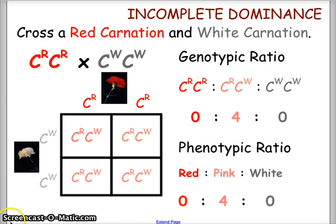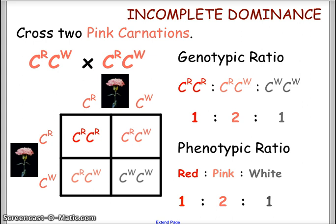Now let's cross two pink carnations: CR CW by CR CW. Segregating the alleles — CR and CW across the top, CR and CW down the left. The cross gives one CR CR red flower, two CR CW pink flowers, and one CW CW white flower. The genotypic ratio is homozygous red 1, heterozygous pink 2, homozygous white 1. The phenotypic ratio is 1 red : 2 pink : 1 white.